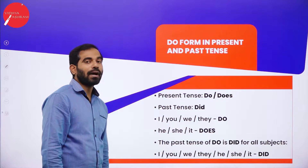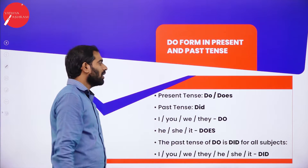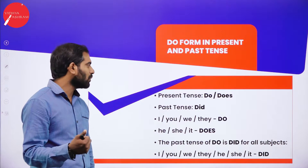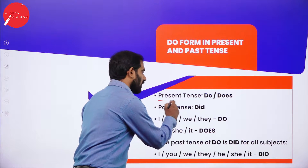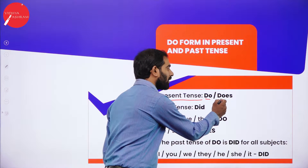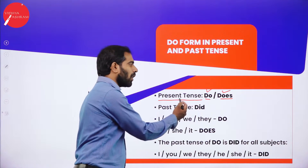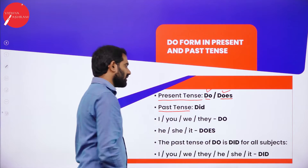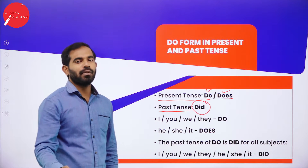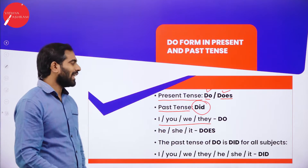DO form in present and past tense. We are going to discuss when to use DO, when to use DOES, and when to use DID. When framing a question for the present tense, we use DO or DOES depending on the subject — singular or plural. If the tense is past tense, we always use DID. When do we use DO? We use DO depending on the subject.